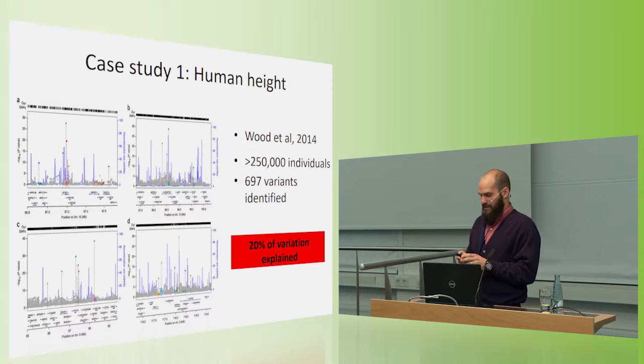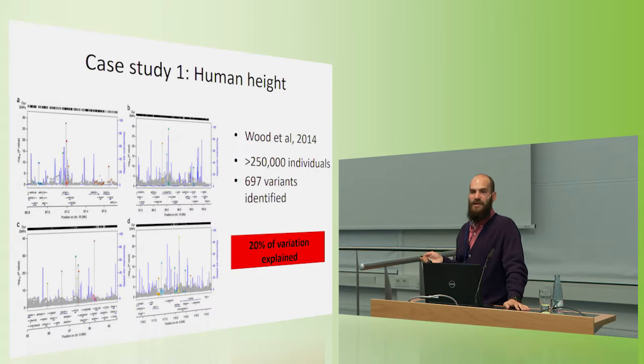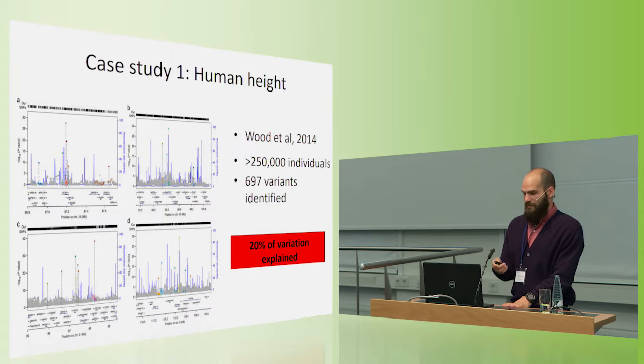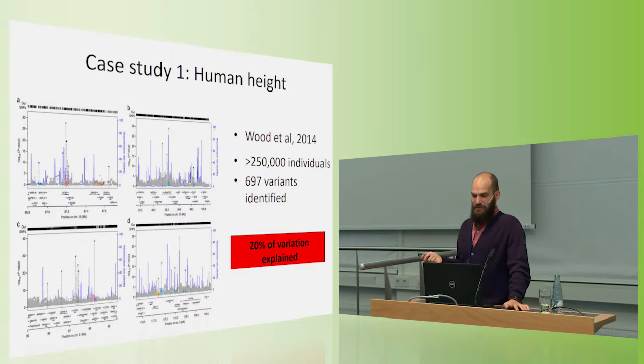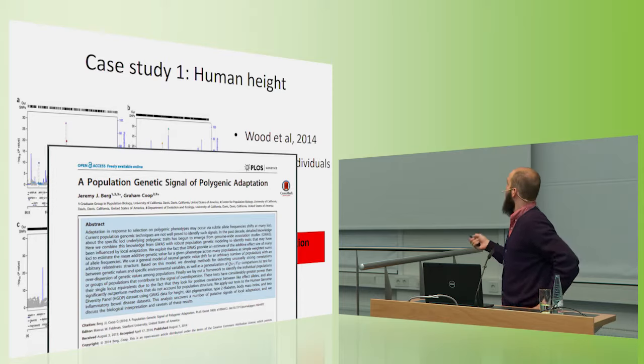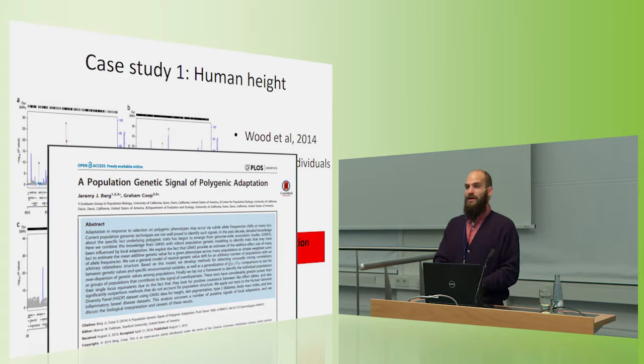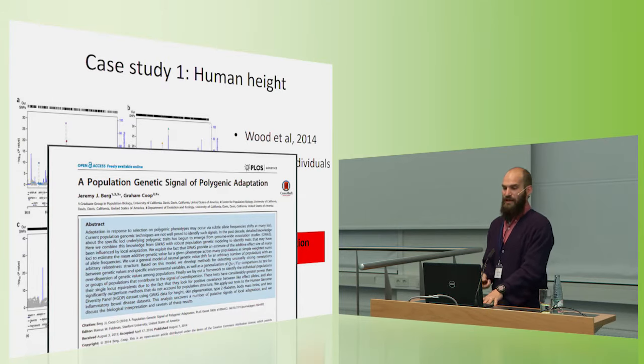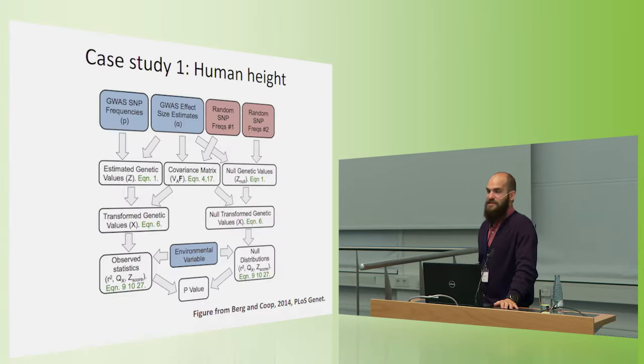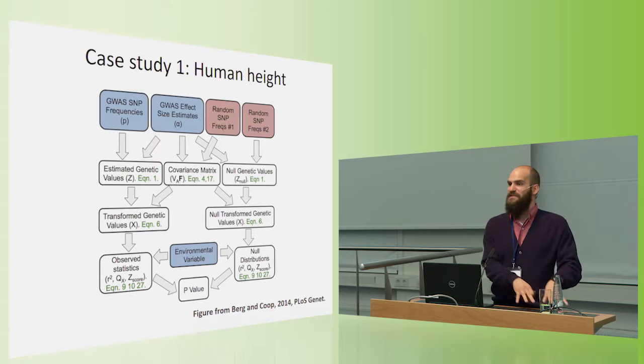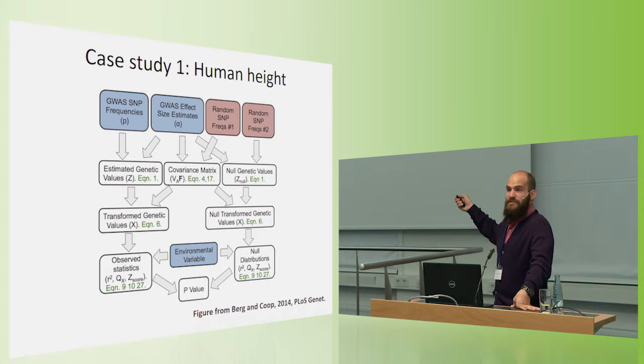So that's good. We have this subset of variants that maybe contribute to height. But if we want to ask the question, has height been under selection in human populations, we have to think a little harder. So Graham Coop and Jeremy Berg developed a method to identify a signal of polygenic adaptation or a signature of selection on a quantitative trait that's really applicable to this type of human setting with massive data sets.